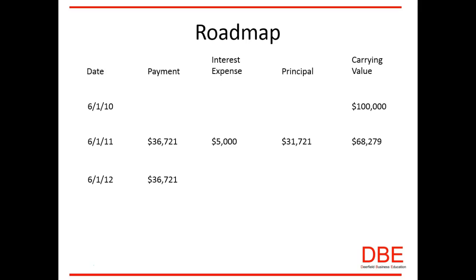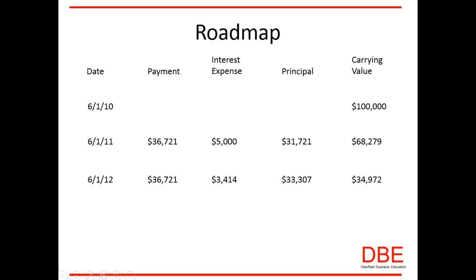We make our payment of thirty-six thousand seven hundred and twenty-one dollars again. Notice our carrying value dropped to sixty-eight thousand two hundred and seventy-nine dollars, giving us interest expense of three thousand four hundred and fourteen dollars. More of the payment now goes towards principal and less towards interest, because the carrying value is slowly decreasing. We then have a carrying value of thirty-four thousand nine hundred and seventy-two dollars. On the final third-year payment, the interest expense is very small, the principal payment brings the carrying value all the way down to zero.